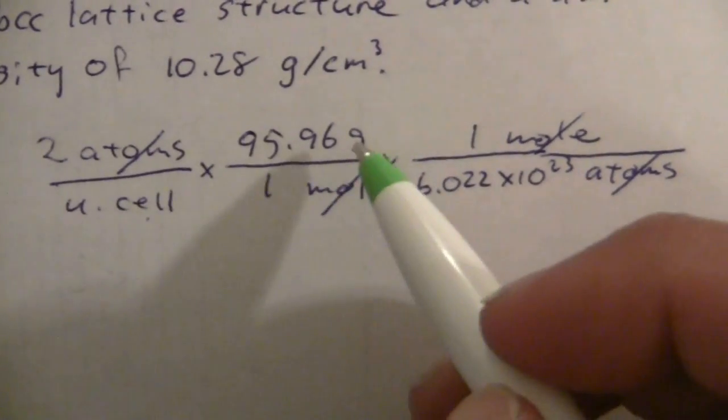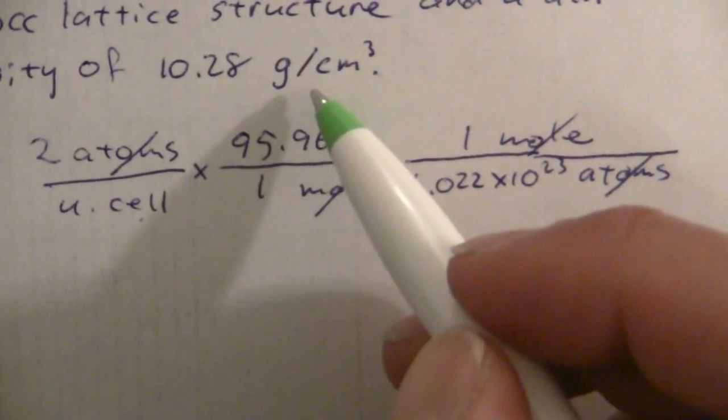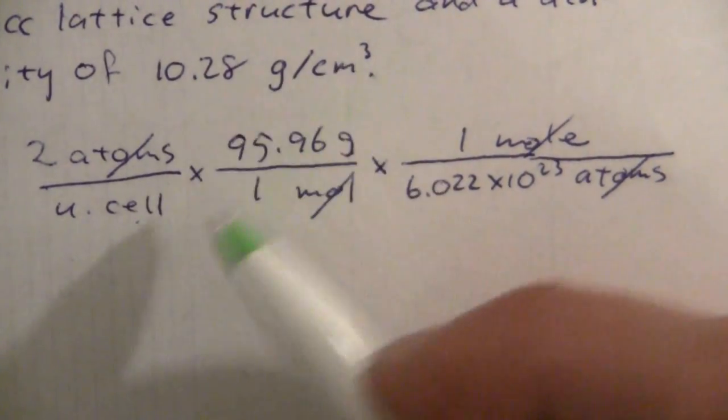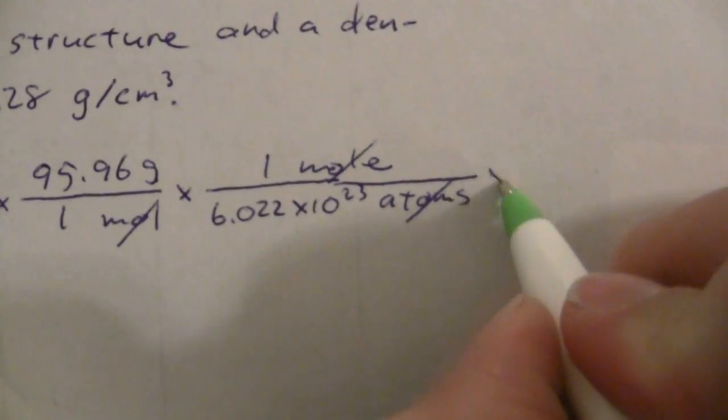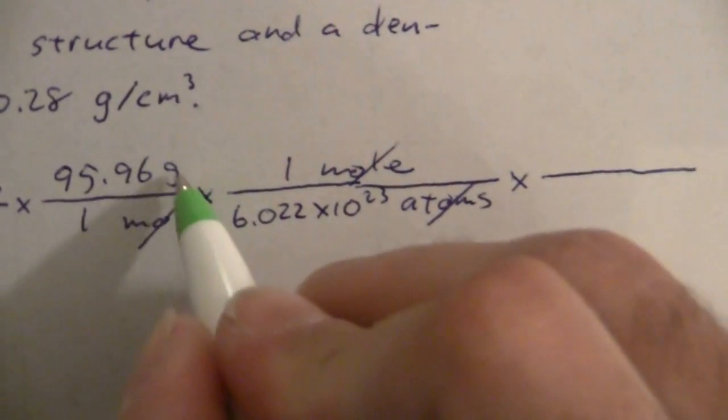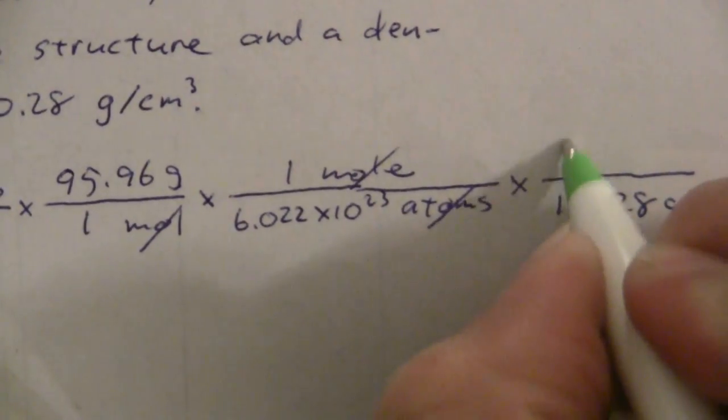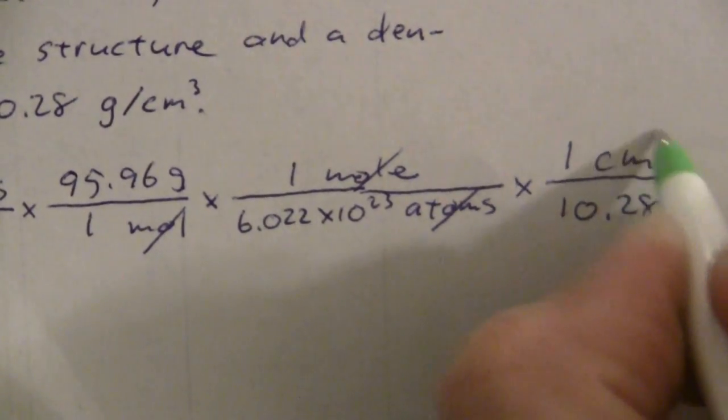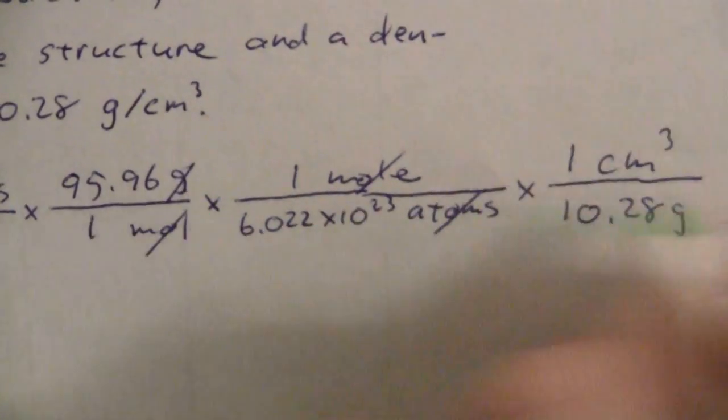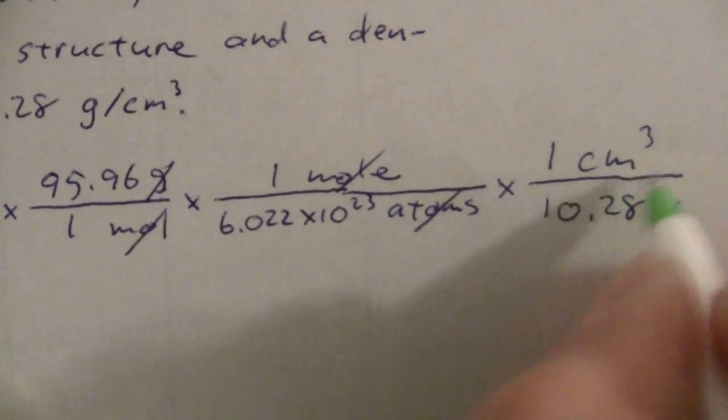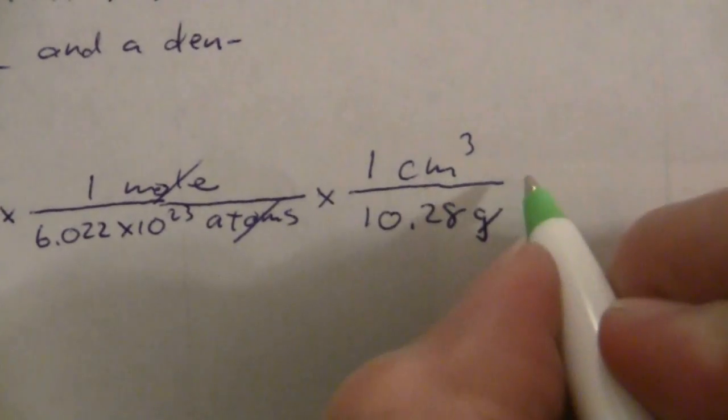So at this point now I can throw in the density to get the volume per unit cell. So I need the grams to cancel, 10.28 grams per cubic centimeter. Now my grams cancel and I have the volume of the cubic cell.